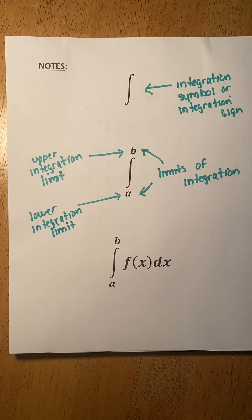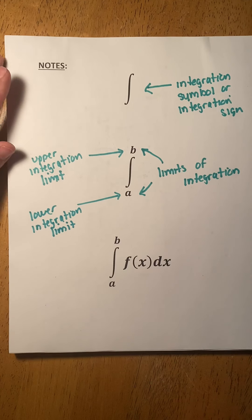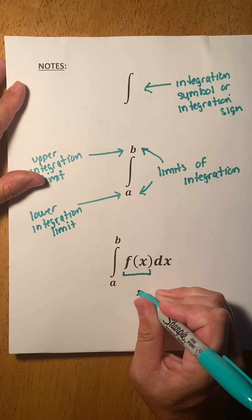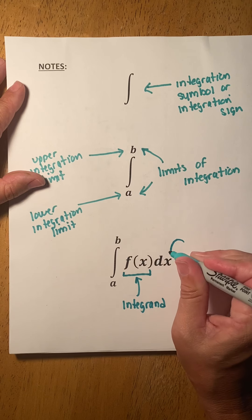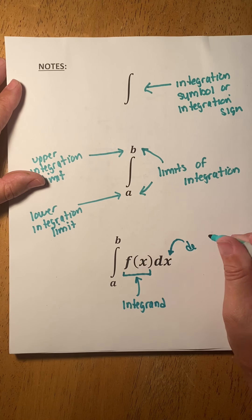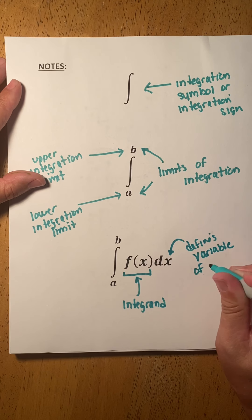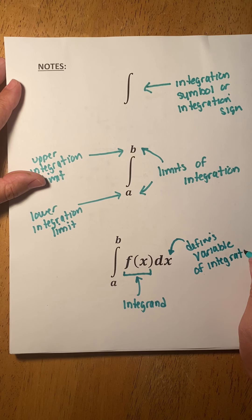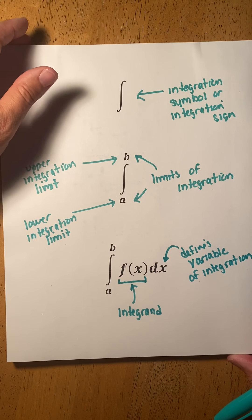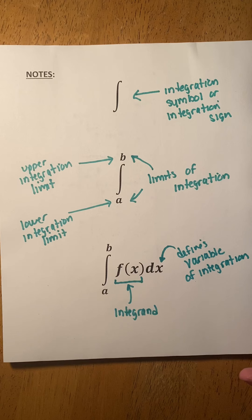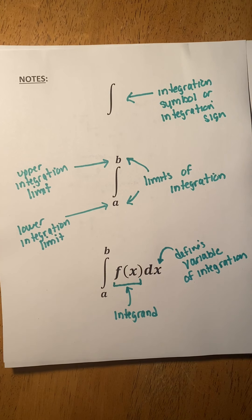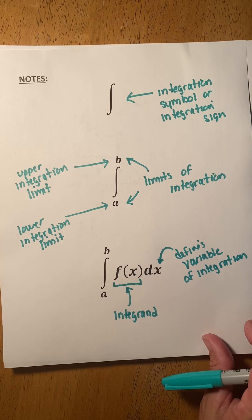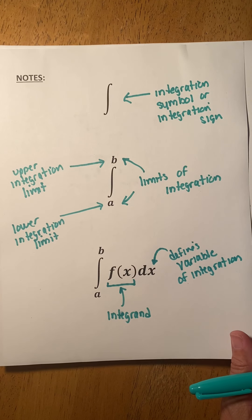When we place a function to the right of the integration sign — technically inside the integral — the function itself is called the integrand. The dx identifies the variable of integration. When you get into higher-level calculus like Calc 3, we'll do multivariable integrals, and this tells you what variable to integrate with respect to. So remember, definite integrals are just notation for finding the area between the curve and the x-axis over the given limits.